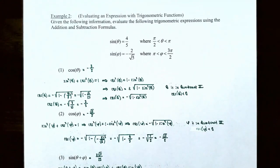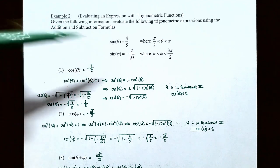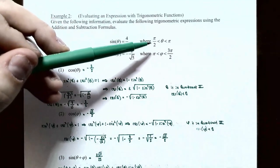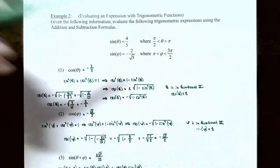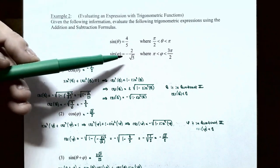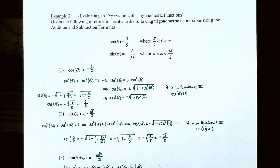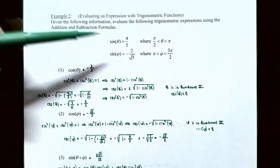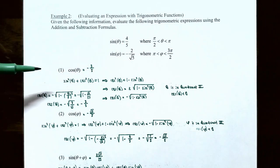Example two: evaluating an expression with trigonometric functions. Given the following information, evaluate using the addition and subtraction formulas. We have sine(θ) = 4/5, where θ is between π/2 and π, so θ is in quadrant 2. And sine(φ) = -2/√5, where φ is between π and 3π/2, so φ is in quadrant 3.